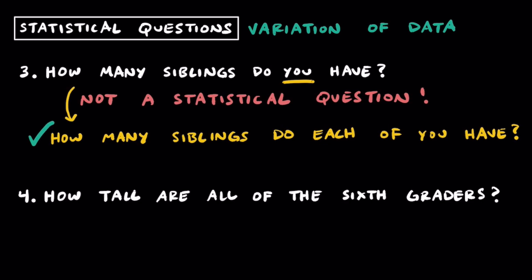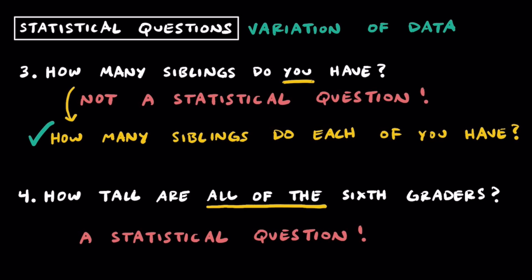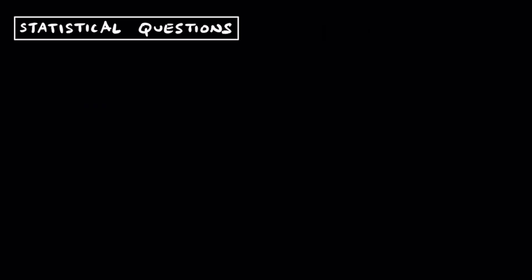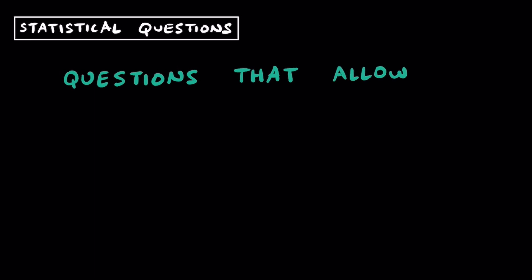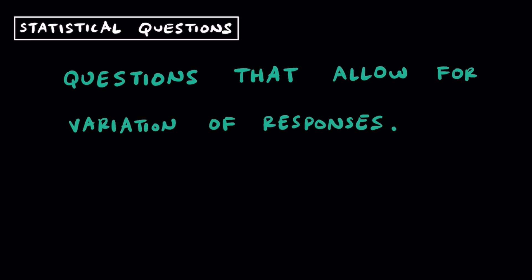Looking at a fourth and final question: how tall are all of the 6th graders? If we're asking all of the 6th graders, which is a bunch of them, this is going to be a statistical question because we're going to expect variation of data — a bunch of different data points from each of the different people we're asking. The key takeaway here is that statistical questions allow for variation of responses or multiple answers.